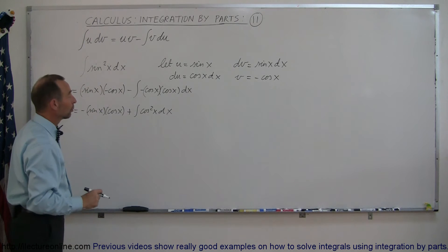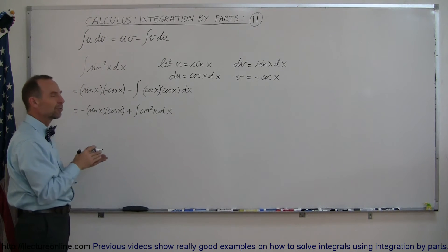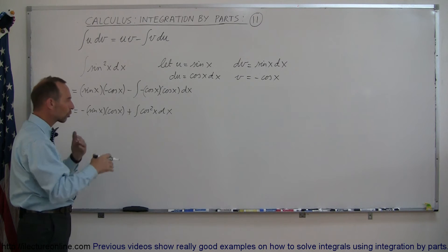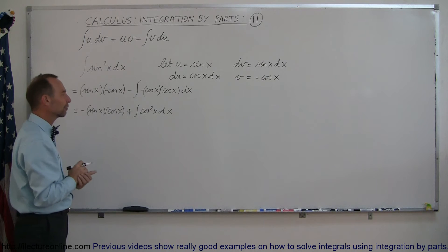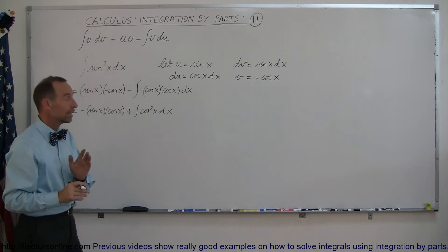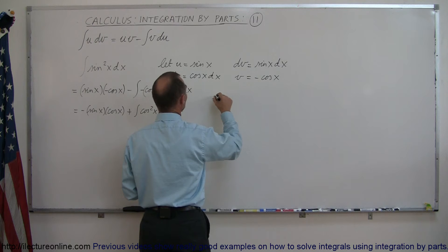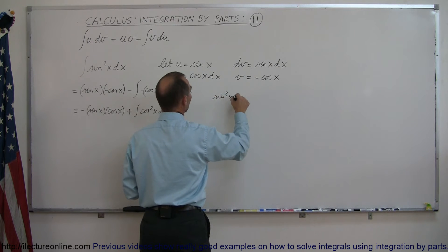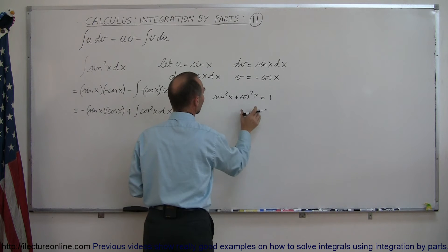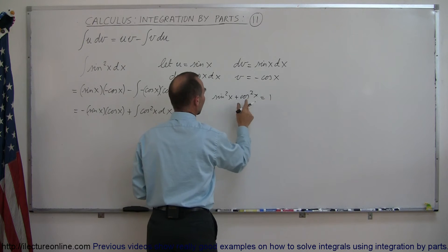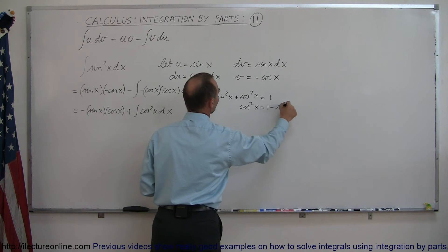Now we could go ahead and do integration by parts again, but if you do that you end up with a circular result where you end up back with the integral of sine squared of x, and you cannot integrate any further. But remembering the trigonometric identity: sine squared of x plus cosine squared of x equals 1, so cosine squared of x equals 1 minus sine squared of x.